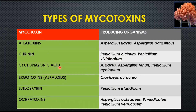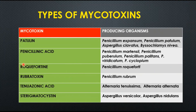Luteoskyrin is produced by Penicillium islandicum. Ochratoxins are produced by Aspergillus ochraceus, Penicillium viridactum, and Penicillium viridicatum. Patulin is produced by Penicillium species, Aspergillus species, and Byssochlamys nivea. Penicillic acid is produced by the majority of Penicillium species.